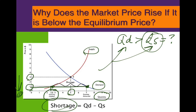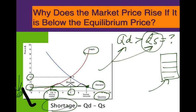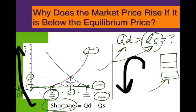Think about right before Christmas — the really hot product you can't find anywhere ends up in excess demand, creating a shortage. In a shortage, you go to the store shelves and they're empty. So what suppliers can do is raise the price. If they raise the price, the quantity demanded will go down and the shortage will eventually be resolved.